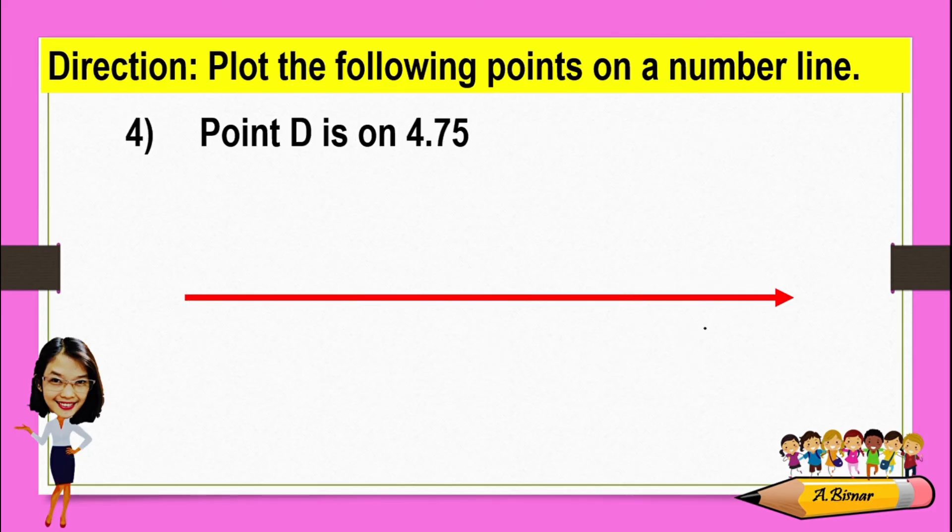Another, point D is on 4.75, which is properly read as 4 and 75 hundredths. What does this mean? It means that point D is between 4 and 5.